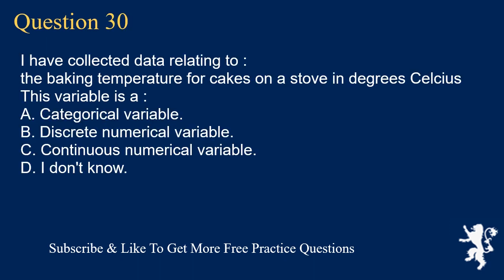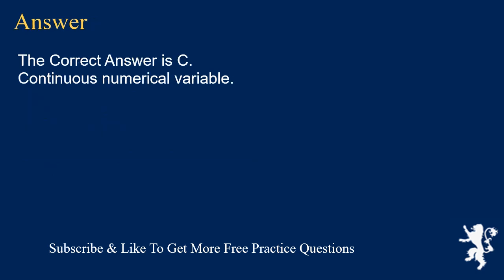Question 30: I have collected data relating to the baking temperature for cakes on a stove in degrees Celsius. This variable is A. a categorical variable, D. I don't know. The correct answer is C, continuous numerical variable.